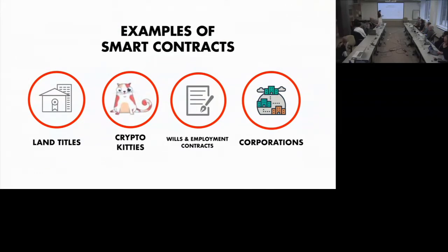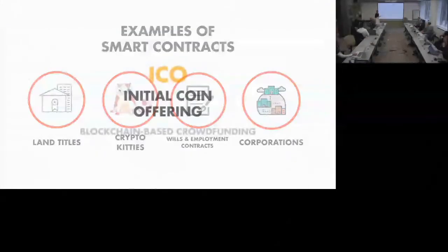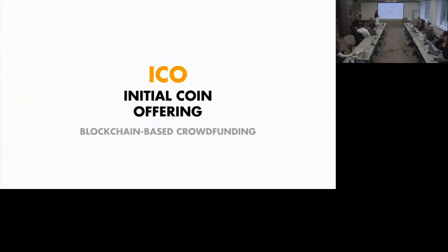And then lastly, corporations. Smart contracts can create corporate governance structures — in the law world, it would be akin to articles of incorporation. These are sometimes called DAOs — decentralized autonomous organizations — and they can behave in ways similar to regular corporations. Namely, they can raise capital like a regular corporation would, and they do that through ICOs, initial coin offerings. ICOs are a blockchain version of crowdfunding where anyone in the world can participate. It's its own topic — we could spend a whole lecture on it.